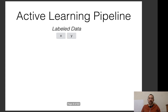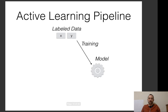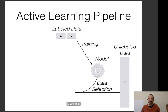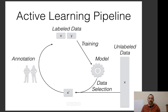To go through the active learning pipeline: we have some labeled data XY, we perform training and get a model. We then have unlabeled data, and we run this through our model and perform data selection to get a small sample. We run this sample through the annotation process to get new training data, which is fed back into our model. We can do this iteratively as many times as we'd like.